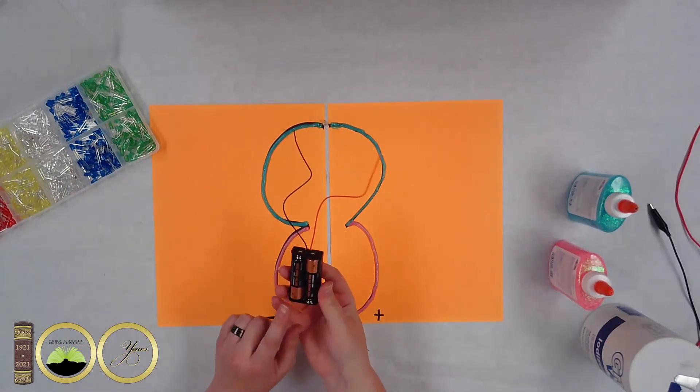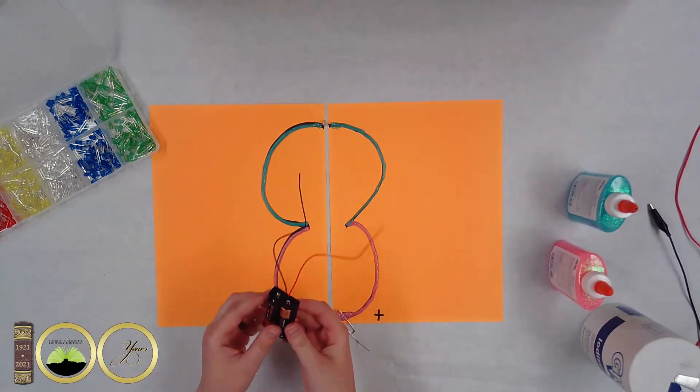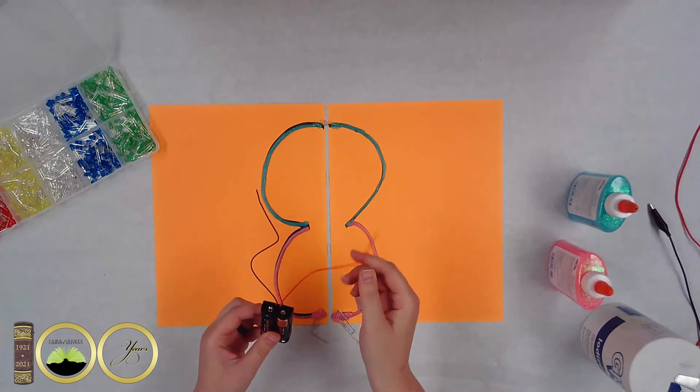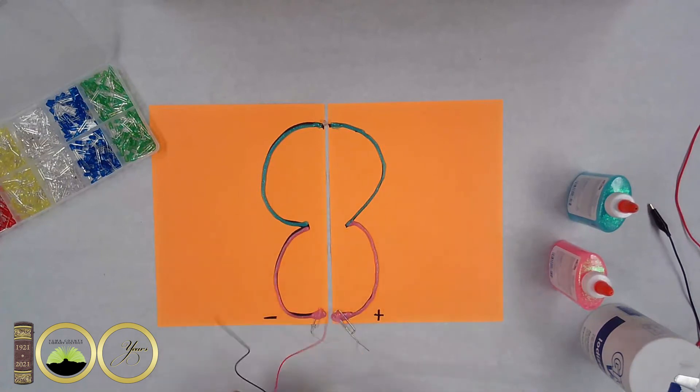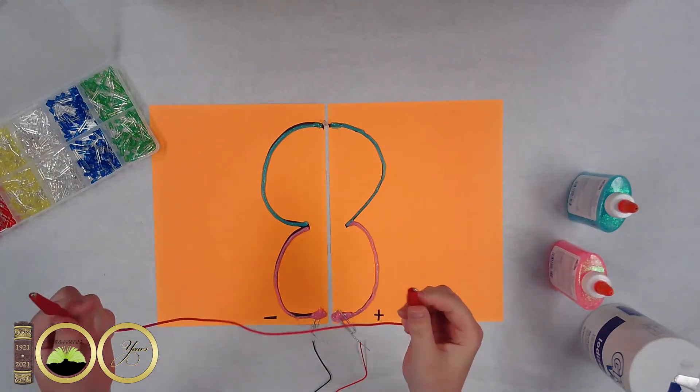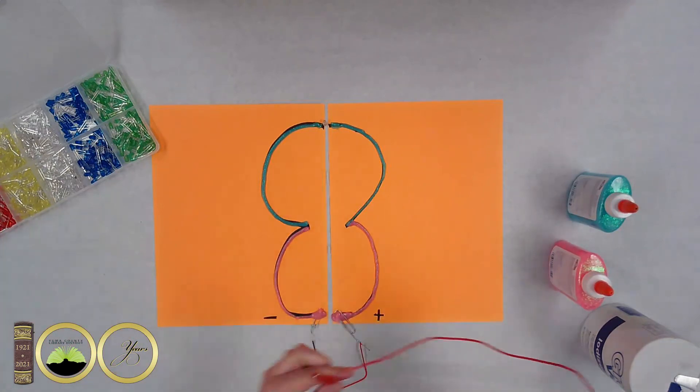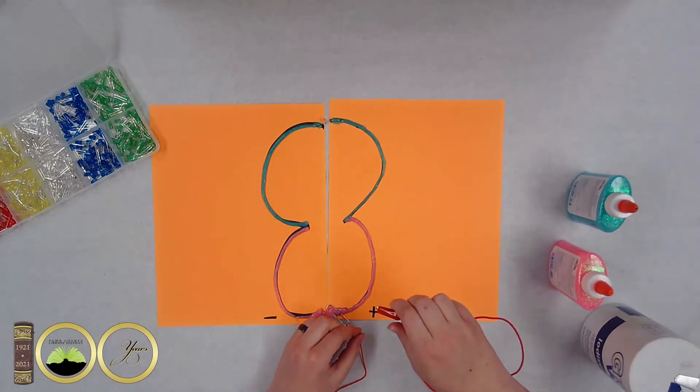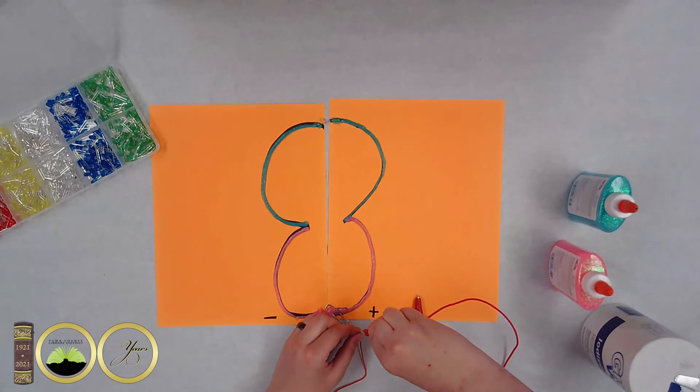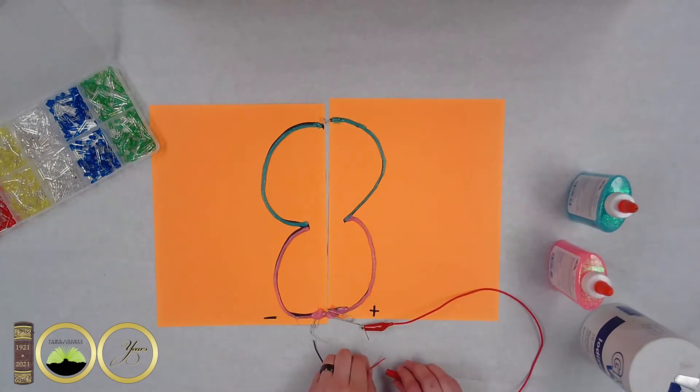Now next we'll need our battery pack. So remember that red is positive and black is negative. So that's how we're going to wire it up. So next we'll take our alligator clips. I'm starting with the positive side and connecting it to the paper clip. Sometimes it can be a little bit difficult. As long as the paper clip is touching the glue your circuit will work. It doesn't have to be perfectly flat.